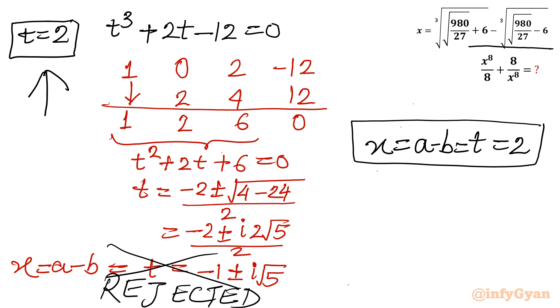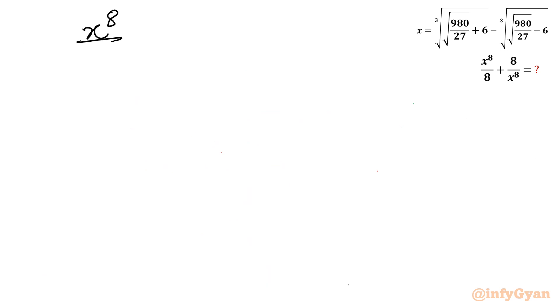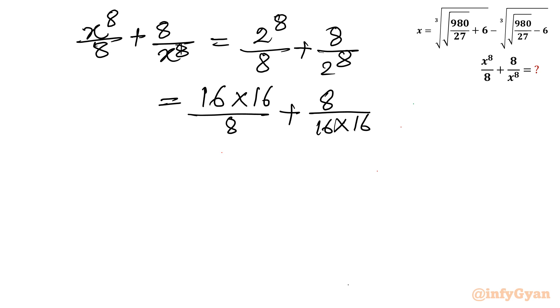Now let us find out this expression value once x is 2. I will write x power 8 over 8 plus 8 over x power 8. So it will become 2 power 8 over 8 plus 8 over 2 power 8. So 2 power 8 is 2 power 4 times 2 power 4. Let me write in this manner: 16 times 16 over 8 plus 8 over 16 times 16. So we can cancel immediately like this, 16 and 8. So it is 32 plus 1 over 32.